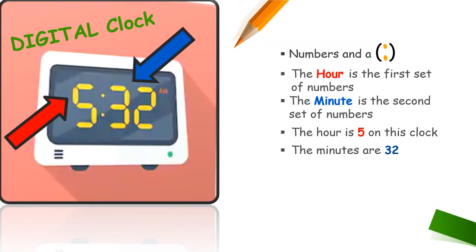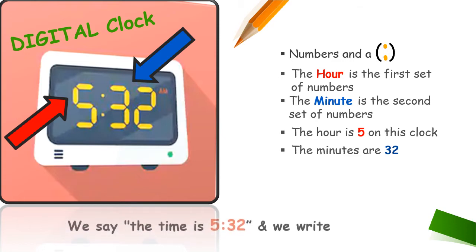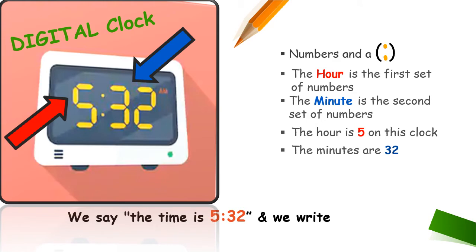A digital clock displays the time of day with numbers divided by a colon. The hour is the first number or set of numbers that you will see. The minutes are the second set of numbers that you see. The hour on this clock is 5 and the minutes are 32, so we would say the time is 5:32, and we would write it like this.